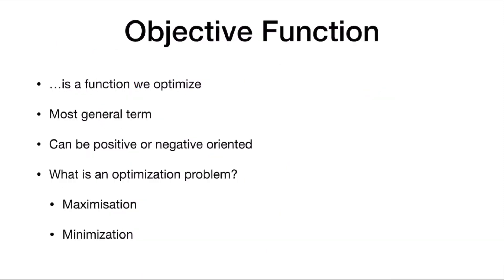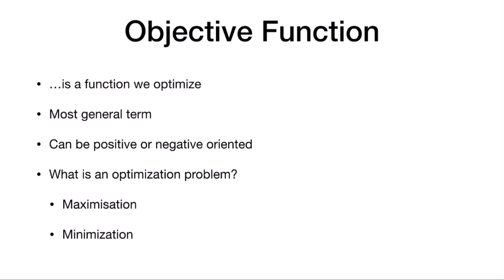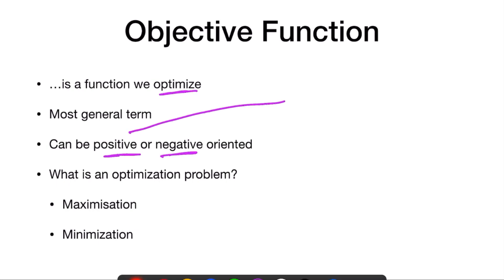Now let us talk about objective function. Objective function is a function which we optimize. It can be either positively oriented or negatively oriented — positive oriented means if the value is high, it is good.